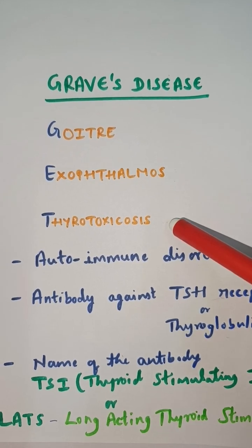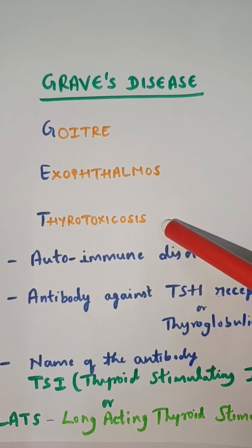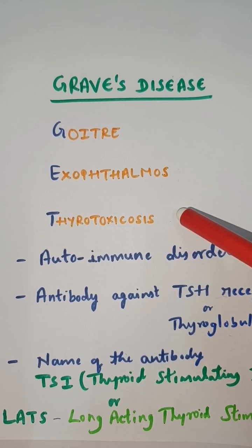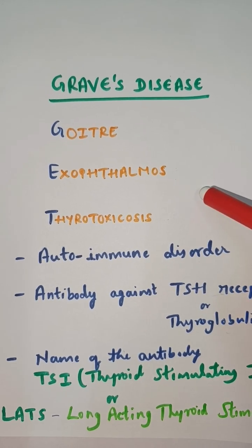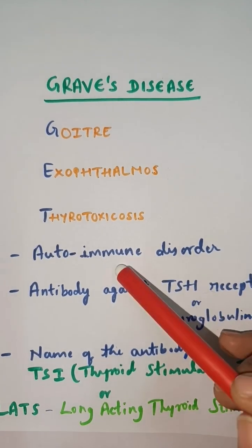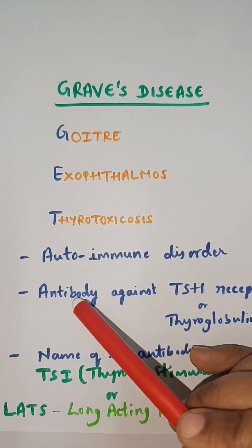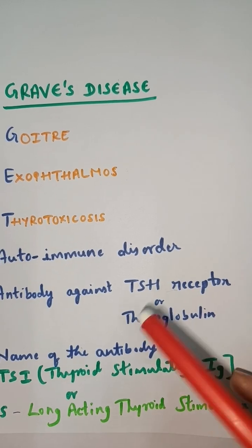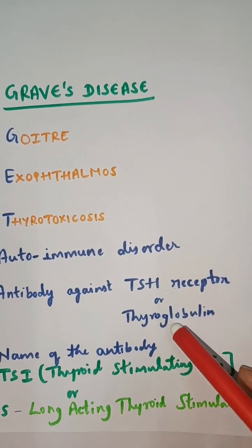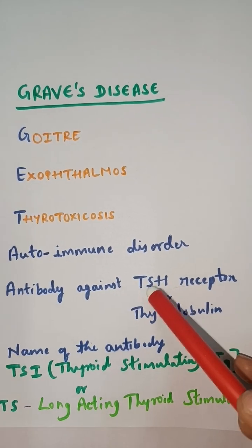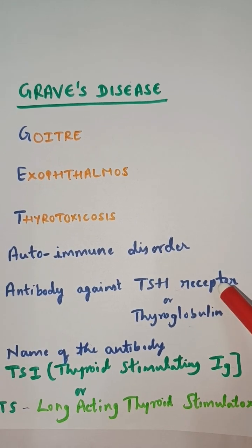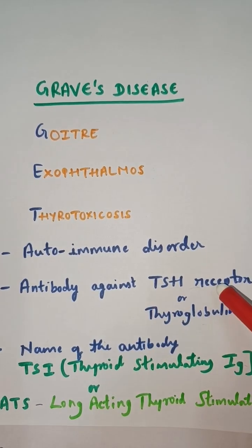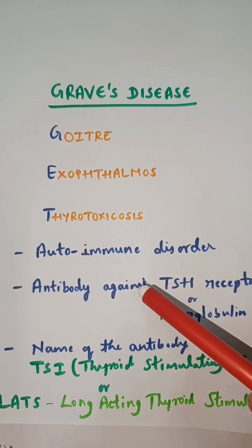Graves' disease is a condition where you get hyperthyroidism, meaning the hormones are excessively produced. Now, why is the hormone produced? Because it's an autoimmune disorder where our immune system produces antibodies against the TSH receptor, or it may be against thyroglobulin also. So the TSH receptor is excessively stimulated, and the thyroid gland will start producing excessive thyroid hormone.